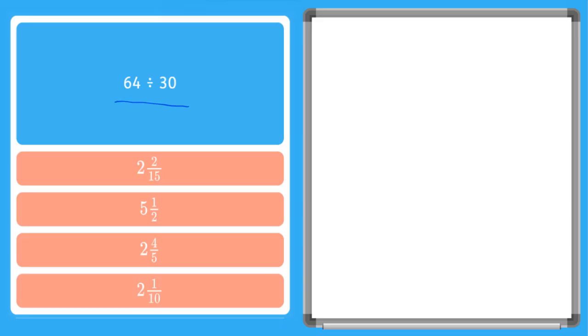All right, here it says 64 divided by 30. So we're going to do this division and then when we find a remainder we're going to write it as a fraction as you can see here in our answer choices. So let's set it up to start. So we know that it's going to be 30 divided into 64.